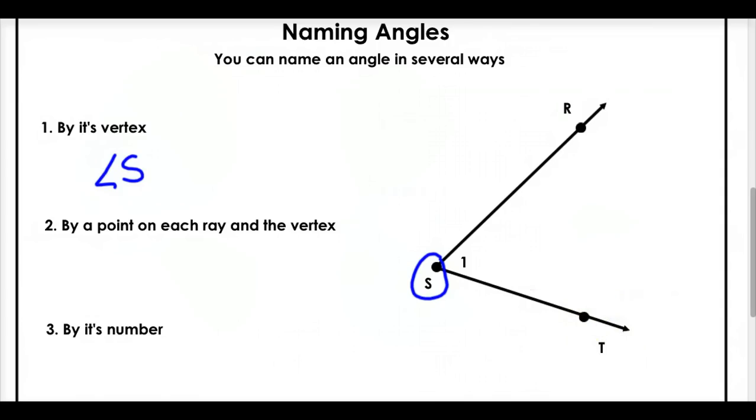Another way that we could name this angle is by a point on each ray and the vertex. And let me be very specific about how you say this. You can name it by using all of these three points. So point on the rays and the vertex. Now, a vertex always goes in the middle. So we would call this angle, either angle, hold on, angle R, S, T, right?